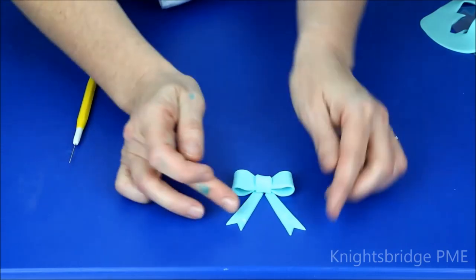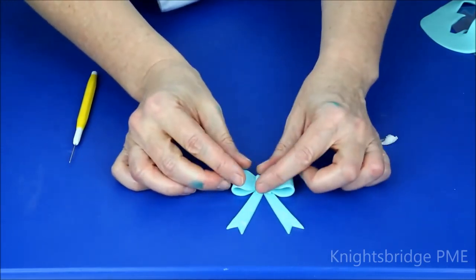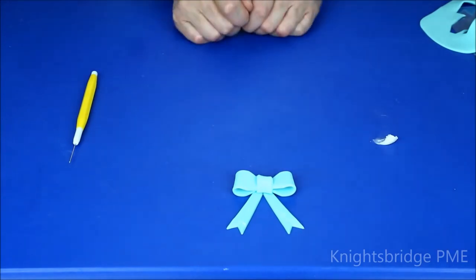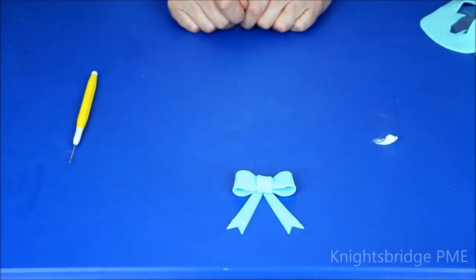Now these can dry or they can be glued into place when they're on your cake or onto your plaque. And that's how to make a little gem bow.